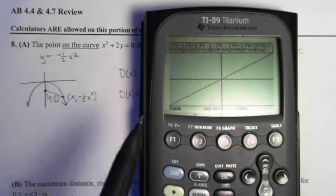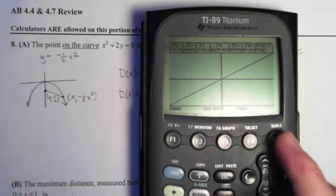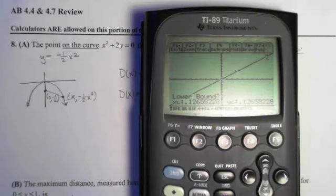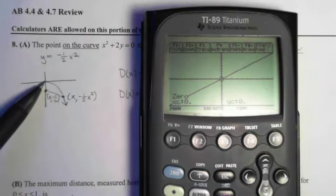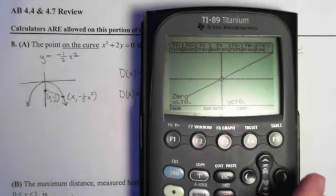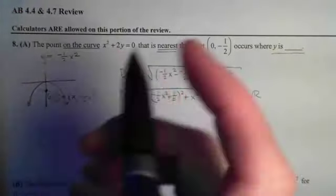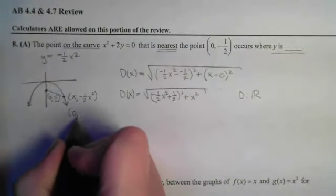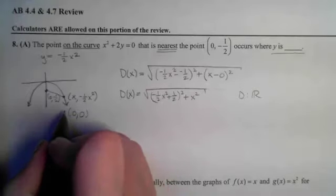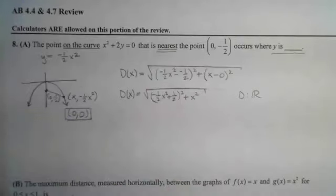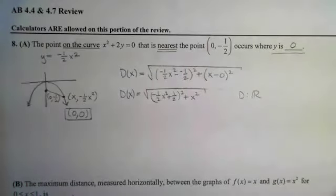But we're now going to find that 0, which looks like it's at 0. We'll verify that that is indeed the case. Lower bound, upper bound, appears to happen at 0, just as we would anticipate. That point's going to be closer than all the ones that are off to the side. So the x-coordinate was 0. That means the y-coordinate is going to be negative 1 half of 0 squared, which is also 0. So that's the coordinate of the nearest point, and we write y equals 0.